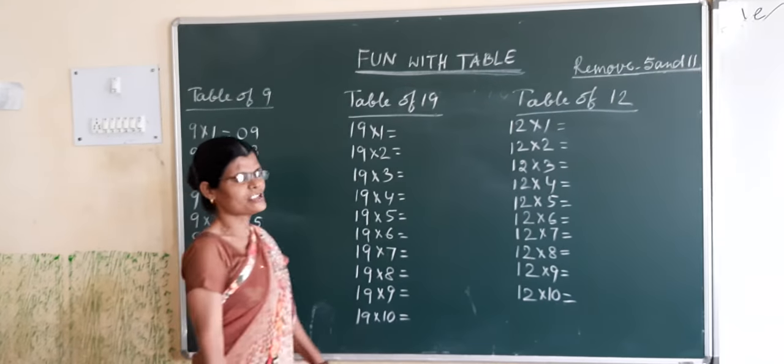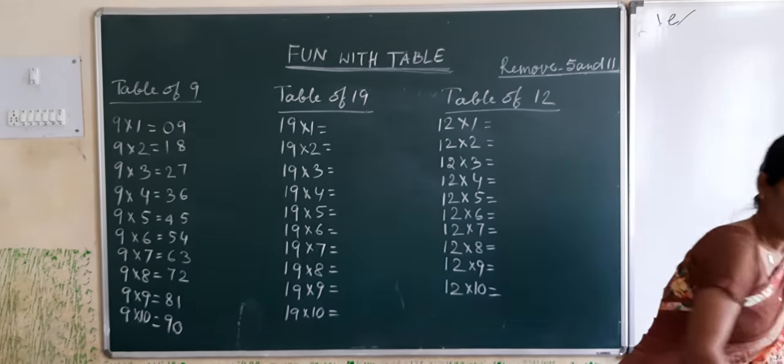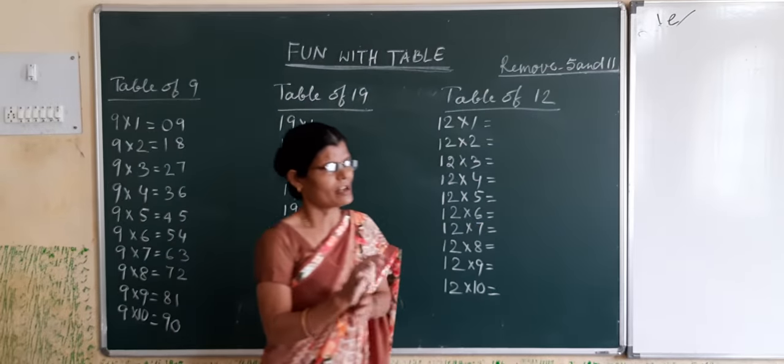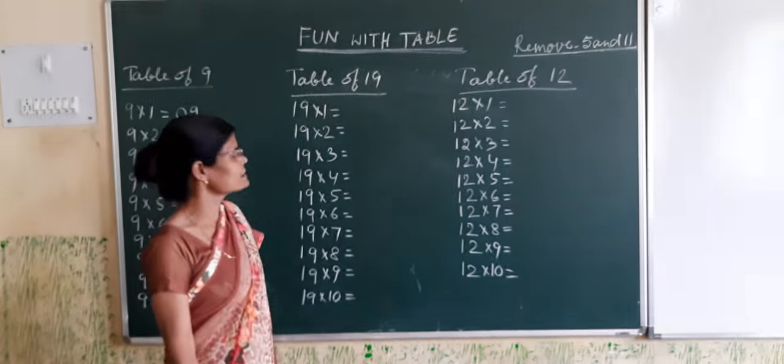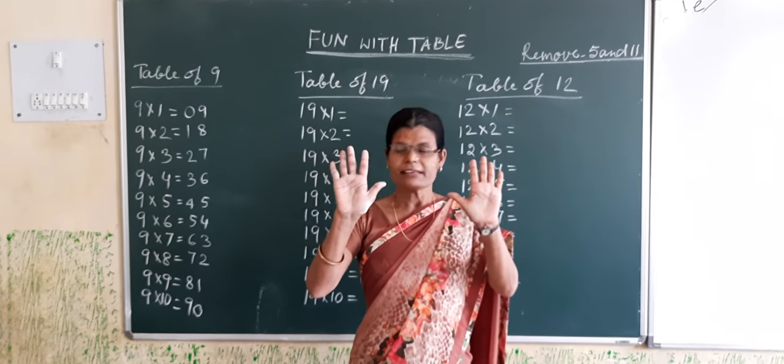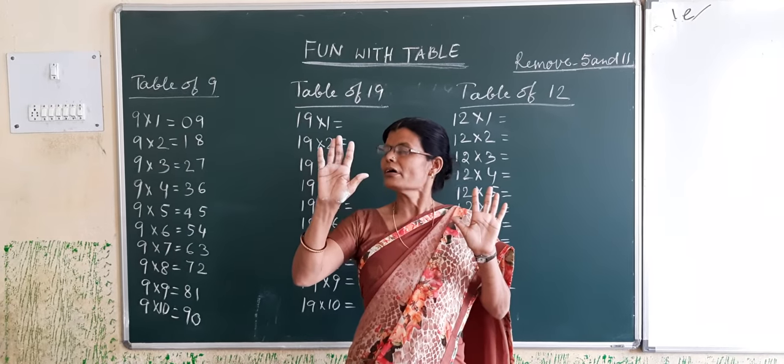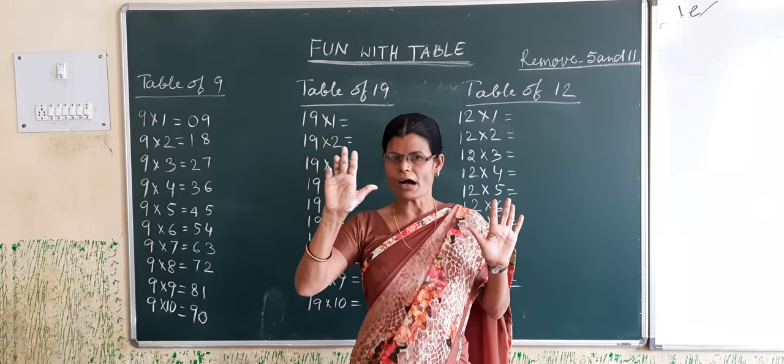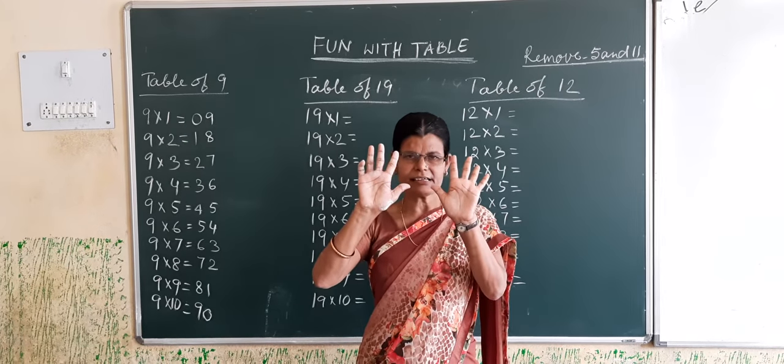Now see. We have 10 fingers. How can we use these fingers to memorize the table? There are 10 fingers in our hands. Now remove one finger, the little finger. How many fingers are there?